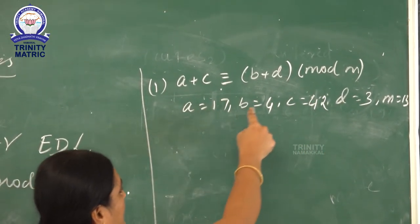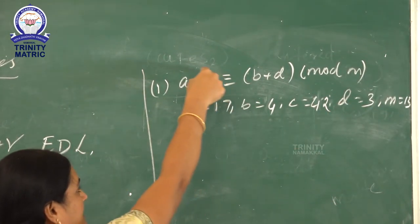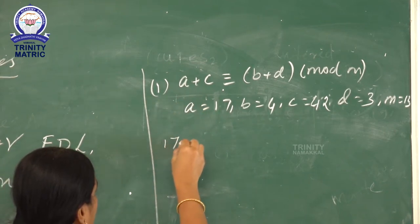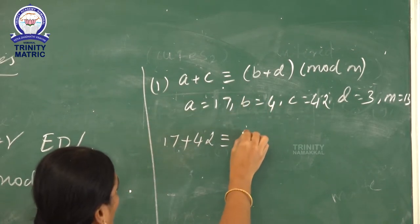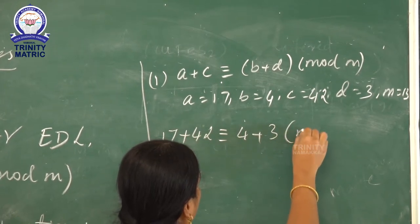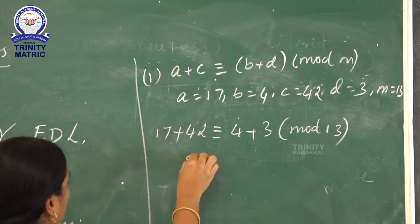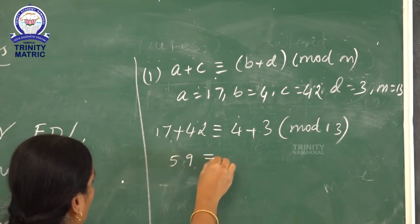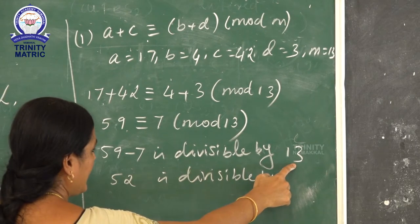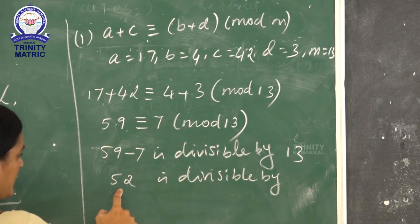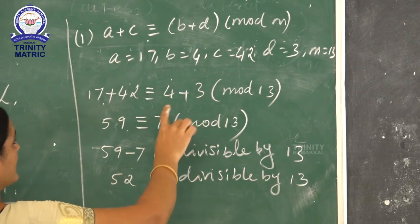Applying the values A equals 17, B equals 4, C equals 42, D equals 3, M equals 13: 17 plus 42 congruent 4 plus 3 mod 13. Adding these, 59 congruent 7 mod 13. Now, 59 minus 7 equals 52, and 52 is divisible by 13. So the first condition is correct.